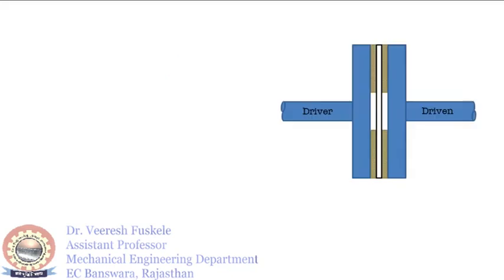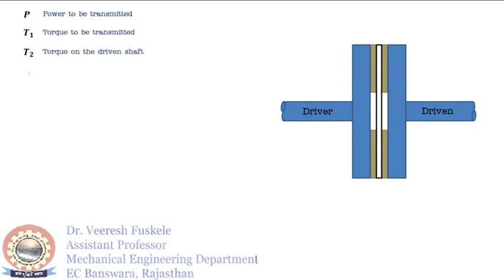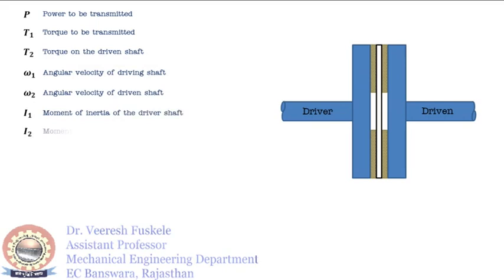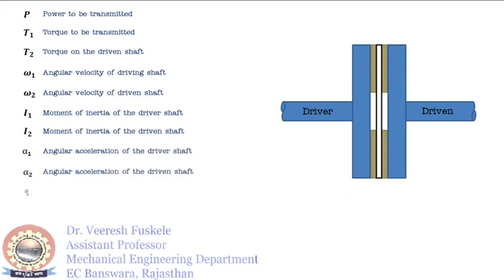Let us consider a clutch assembly where there is a driven shaft and a driver shaft, both connected with a clutch. P is the power to be transmitted from the driver shaft to the driven shaft, T1 is the torque of the driver shaft, T2 is the torque on the driven shaft, omega 1 is the angular velocity of the driver shaft, and omega 2 is the angular velocity of the driven shaft. I1 is the moment of inertia of the driver shaft, I2 is the moment of inertia of the driven shaft, alpha 1 and alpha 2 are the angular accelerations, and theta 1 and theta 2 are the angular displacements of the driver and driven shafts respectively.